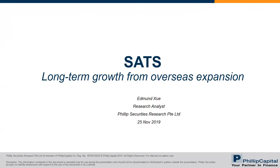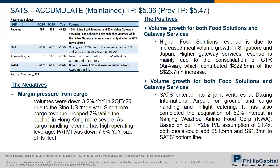Moving on to SATS results. There is volume growth in both food and gateway services. For food, it is mainly due to increased meal volume growth in Singapore and Japan. Gateway services revenue growth is mainly due to the consolidation of GTR, which contributed most of the increase. In terms of acquisitions, SATS entered into two joint ventures at Daxing Airport — the largest international airport in China — for ground and cargo handling, and has completed its acquisition of Nanjing Weizhou. Based on our FY20 PE assumption, the deals could add about $1.3 to $1.5 million to SATS's bottom line.